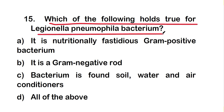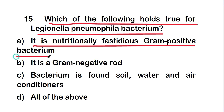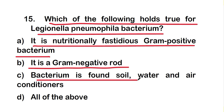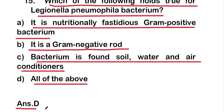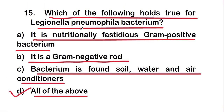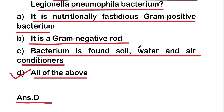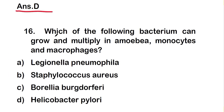Question 15: which of the following holds true for Legionella pneumophila? The options are: it is a nutritionally fastidious gram-positive bacterium, it is a gram-negative rod, bacteria is found in soil, water, or air conditioners, or all of the above. The right answer is option D — all of the above are correct for Legionella pneumophila.